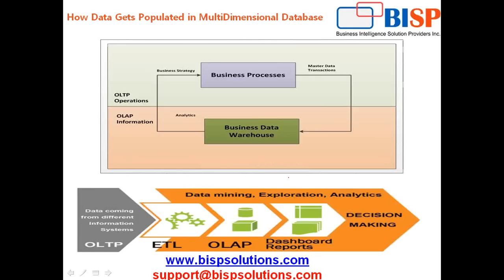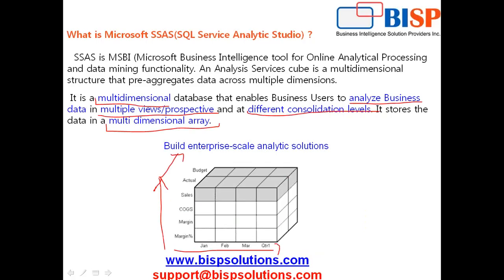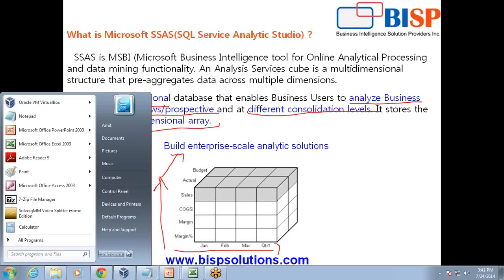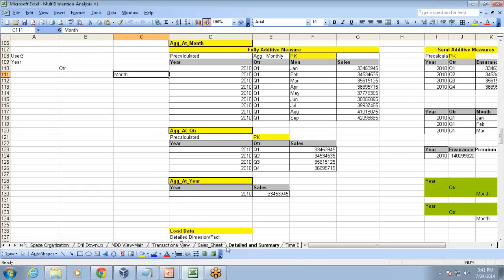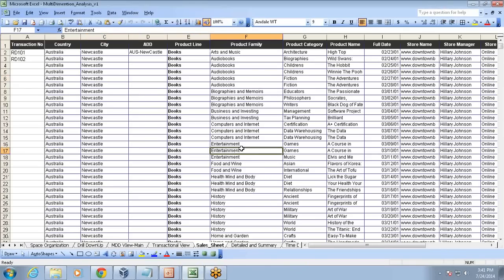Now the first question: as I said, it's a multidimensional database. We already have relational databases like SQL Server, DB2, Oracle - so why do we need a multidimensional database, how does it add value to any organization, and how is it different from a traditional database? In order to understand this, we will look at some sample data. I have sample data for sales order processing.